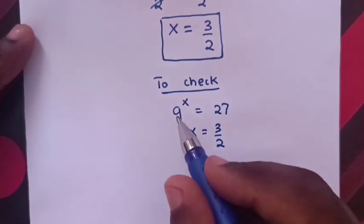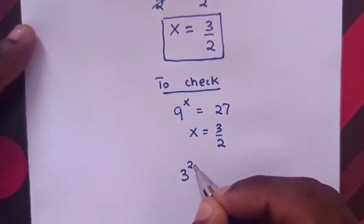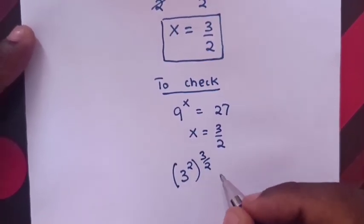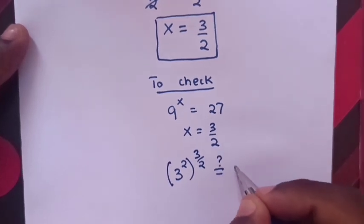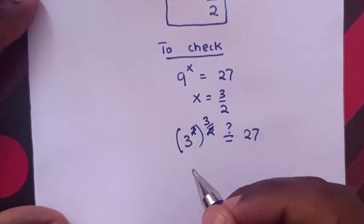So, from 9, 9 is same as 3 square bracket power of x, x is 3 over 2. Is it equal to 27? So, to simplify here, 2 and 2 will cancel.